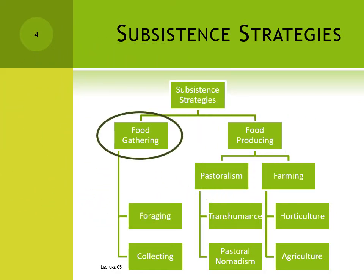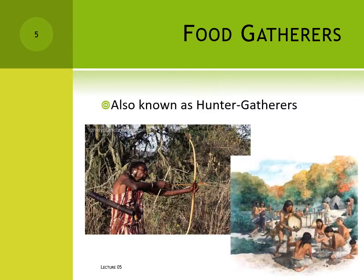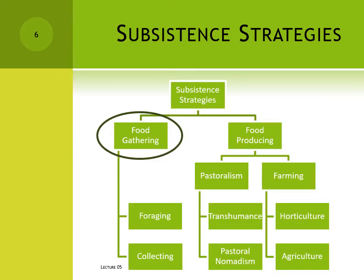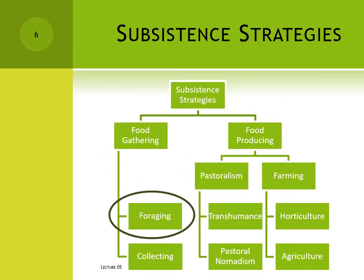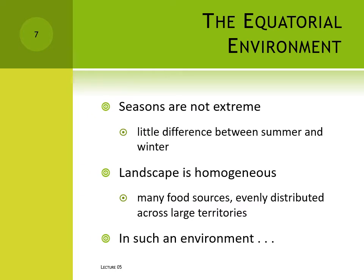Food gatherers are of course usually known by the term hunter-gatherers. These groups move around the landscape to follow the wild food sources they're dependent on. But there are two broad strategies for hunting and gathering, and which works best depends on the environment. The first is foraging. Near the equator the seasons aren't very extreme and the landscape is fairly homogeneous. Many food sources are scattered about the landscape in the same general location. Think about an equatorial rainforest – lots of different types of plants and animals pretty close to one another.